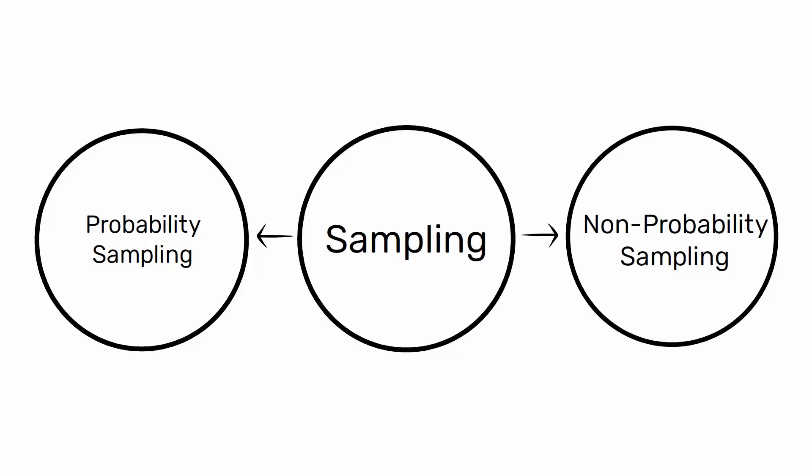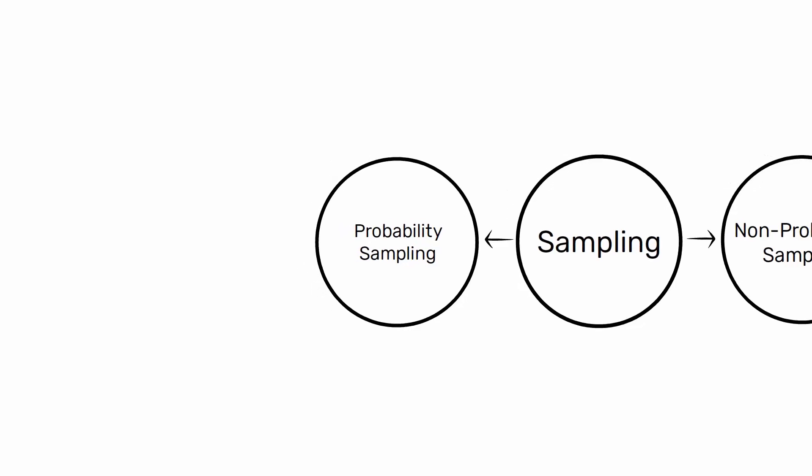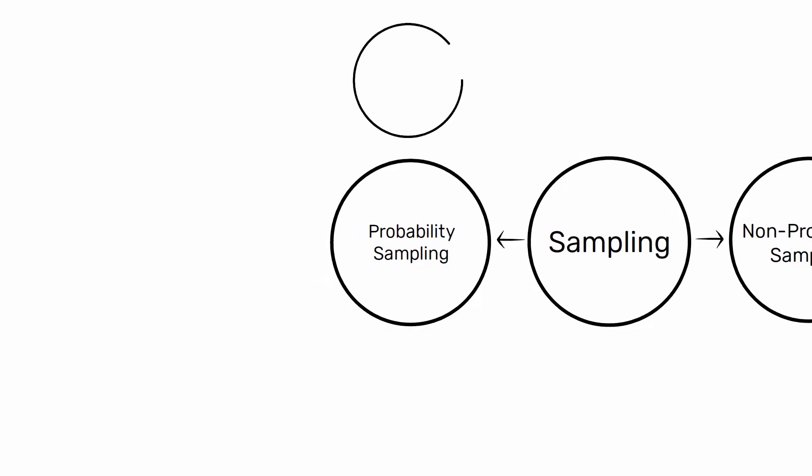Each of these sampling methods has four subsections. Probability sampling methods: 1. Simple random sampling. 2. Systematic sampling. 3. Stratified sampling. 4. Cluster sampling.